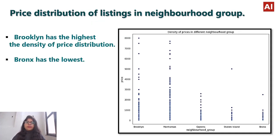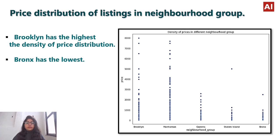Let's see the price distribution of listings in each neighborhood group. Brooklyn has the highest density of price distribution, while Bronx has the lowest. This plot clearly shows that Brooklyn is highest and Bronx is lowest in price distribution density.